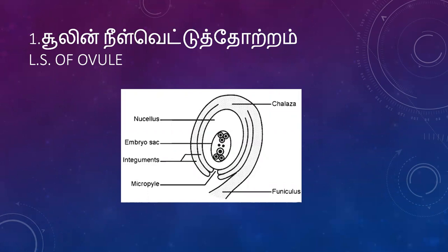The ovule is also known as the Megasporangium. Other structures include the Funiculus, Chalaza, Micropyle, and Nucellus. The Nucellus supplies nutrients to the developing female gametophyte or embryo sac. It is developed from the Megasporangium.